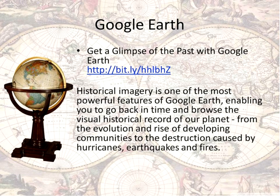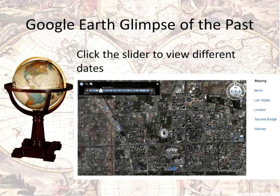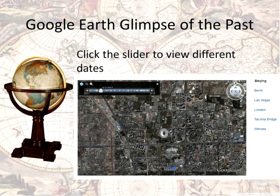Google Earth also added a glimpse of the past — they now have historical imagery where you can go back in time. If you go to a particular place in Google Earth, like a particular city, and you see a slider across the top, this will let you drag the imagery back in time. They're adding this imagery around the world so it's not everywhere yet. What a great way to show students what a city looked like 20, 30, 40, 50 years ago — how it has evolved, what might be gone, what might be new. It's a growing resource.